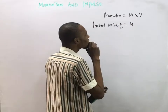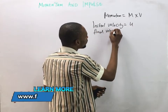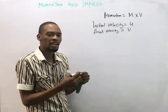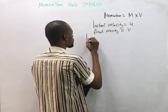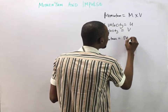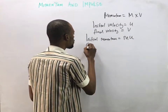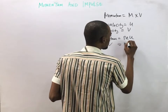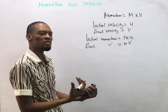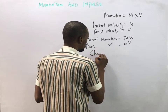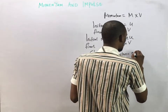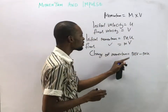Initial velocity equals u and final velocity equals v. If initial velocity is u and final velocity is v, then initial momentum will simply be mass times initial velocity (mu), while final momentum will be mass times final velocity (mv). The change in momentum is therefore final momentum minus initial momentum, which is mv minus mu.